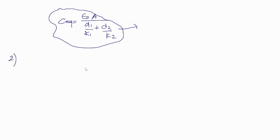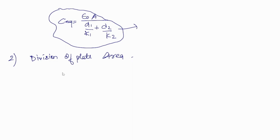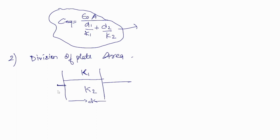Now taking our second case: division of plate area. When they are separated by plate area, the potential difference will be the same, and they will be connected in parallel. So this is a capacitor divided like this, with dielectric constants k1 and k2, distance d, and points A and B.